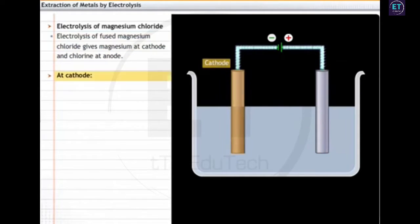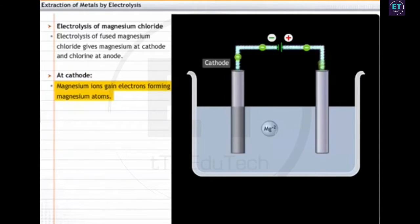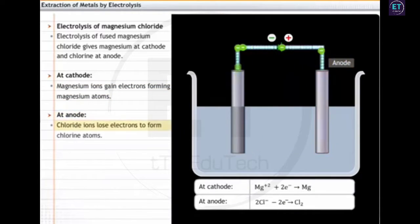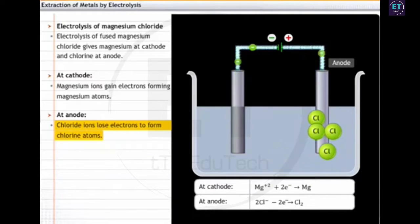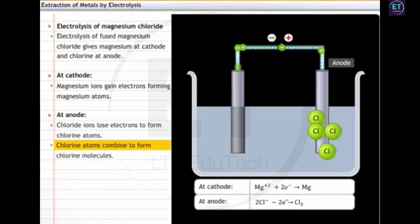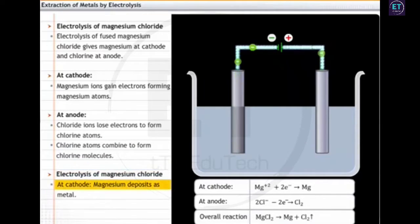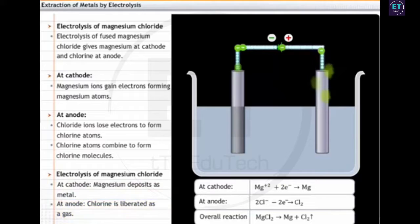During the reaction at the cathode, the reduction of magnesium chloride occurs due to gain of electrons — magnesium ions gain electrons forming magnesium atoms. During the reaction at the anode, chloride ions get oxidized due to loss of electrons, forming chlorine atoms. Chlorine atoms combine to form chlorine molecules. Thus, as a result of electrolysis of magnesium chloride, magnesium metal is deposited at the cathode and chlorine is liberated as a gas at the anode.